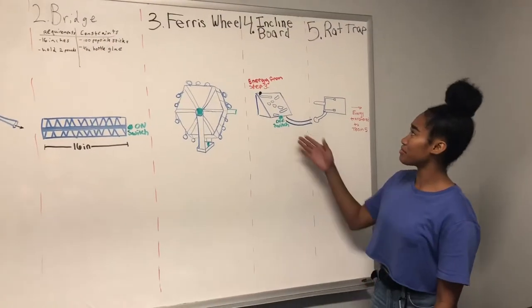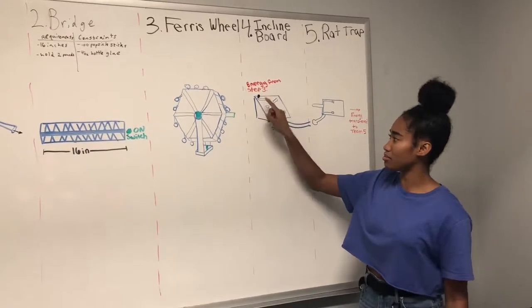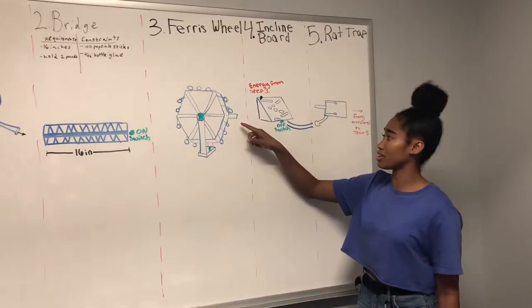Okay, so Step 4 is going to be activated by the tab from Step 3, from the Ferris wheel. The steel ball is that little thing right there.